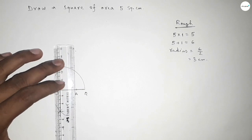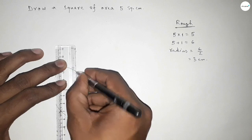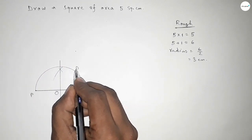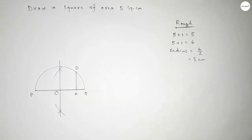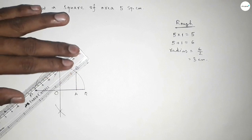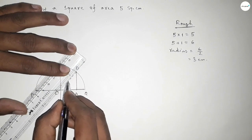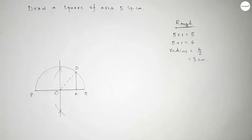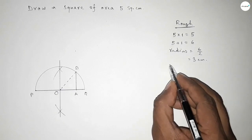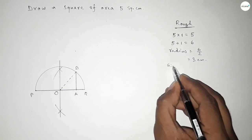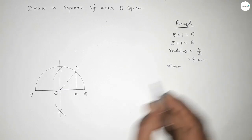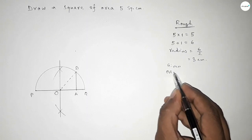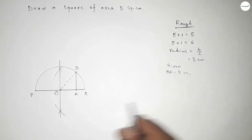Joining this, which meets the semicircle at a point. This is point D. Now joining the radius OD — this is also a radius of the semicircle. Now, roughly discussing some calculation: given OA equal to 2 centimeters.